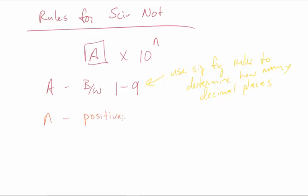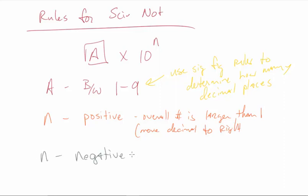If N is positive, right, it's when the overall number is larger than 1. And we move the decimal to the right. The other version of this is N. If it's negative, the overall number is smaller than 1. And then the negative number there is telling us to move decimal to the left.